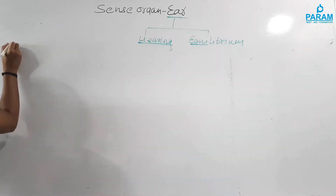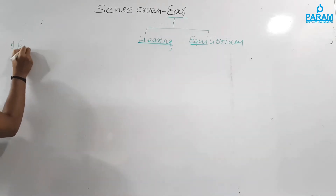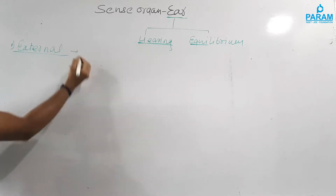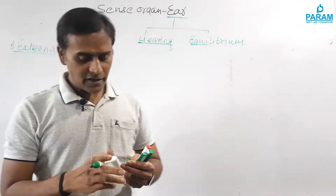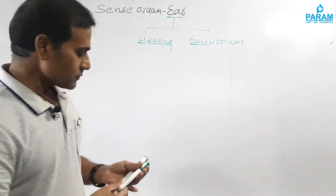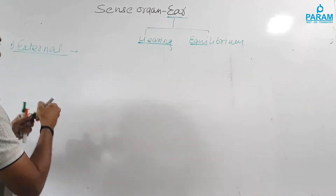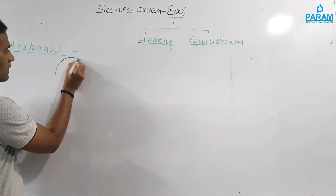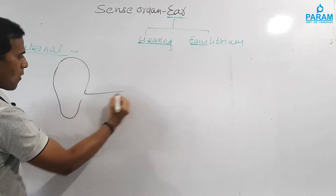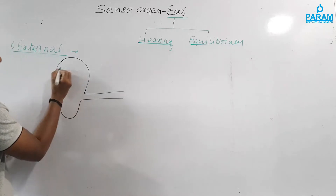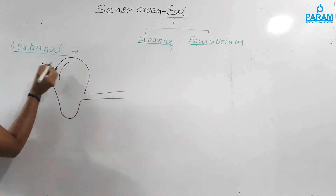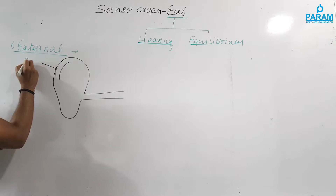We will start with the external ear, because the structure of the ear is divided into three parts: external ear, middle ear, and internal ear. In the external ear, this cartilaginous part is called the pinna.